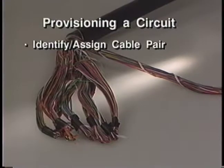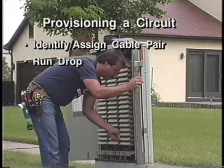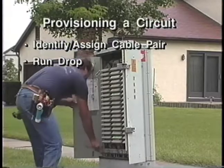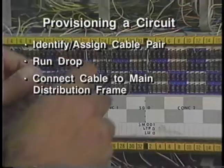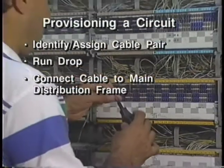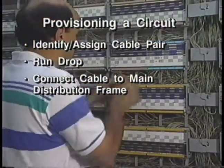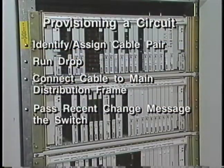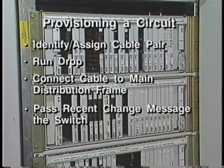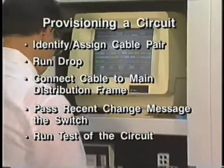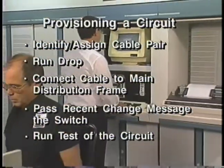Because this is a new house, a drop will have to be run from the cable pair at the pole or pedestal to the new home. At the other end, the cable pair must be connected to the main distribution frame in the central office. Once the physical connections are made, the switch must be reprogrammed using a recent change message. Before service is turned up for the customer, a test of the circuit is run. Once the service order is entered, the order processing system passes information to other computerized support systems, triggering a whole sequence of automated events.